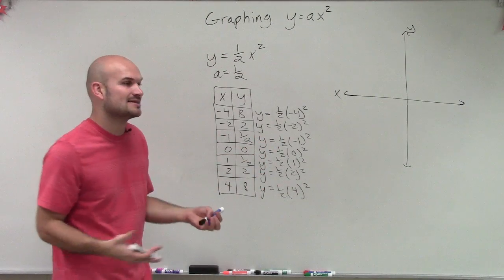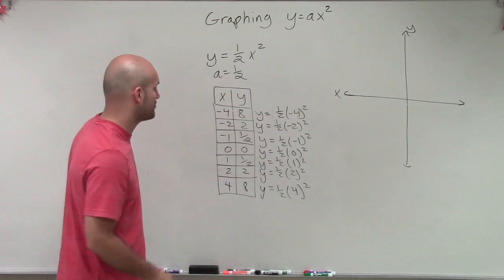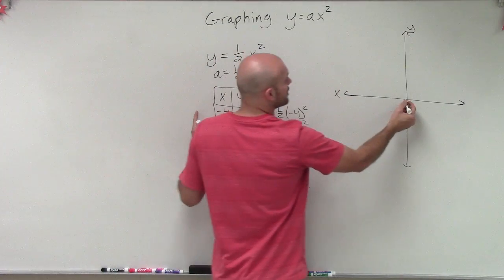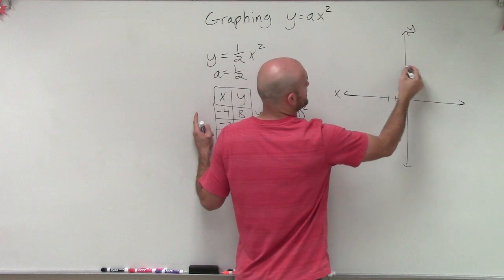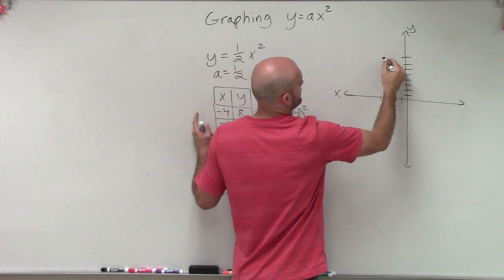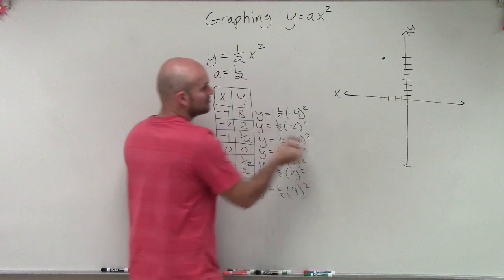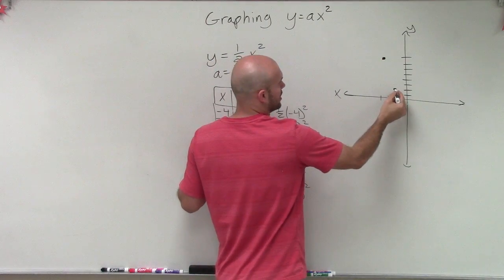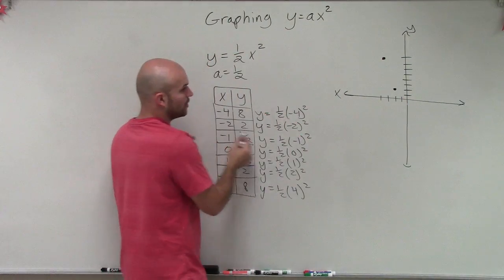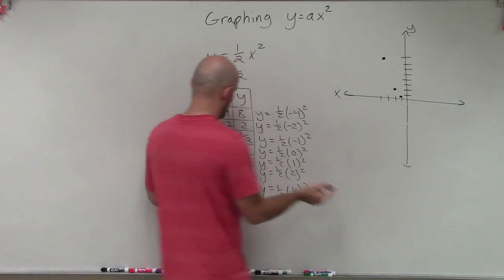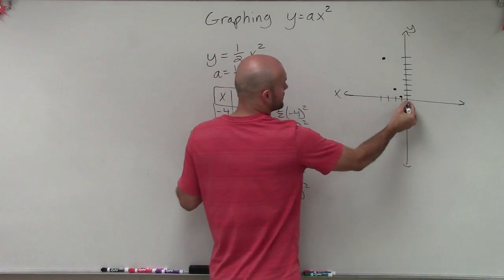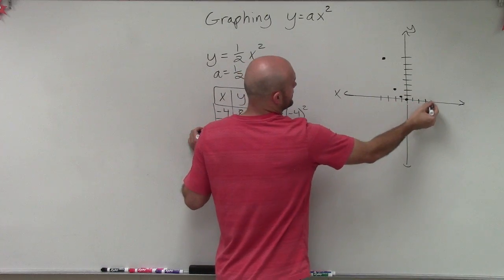So let's go and plot these points and see how that shows up on our graph for our parabola. I go over negative 4, 1, 2, 3, 4, up 8. Then I have negative 2, comma 2, so negative 2, up 2. Then I have negative 1, up 1 half, so negative 1, but I'm only going to go up half way. Then I have 0, 0. Then 1, 2, 3, 4.